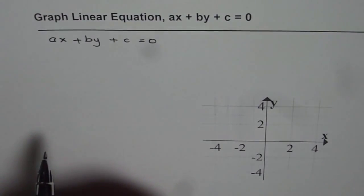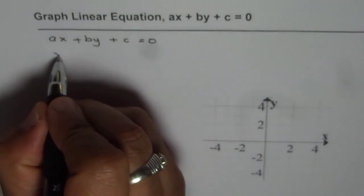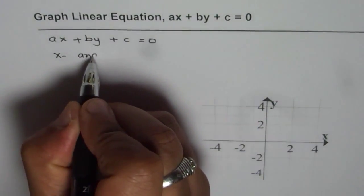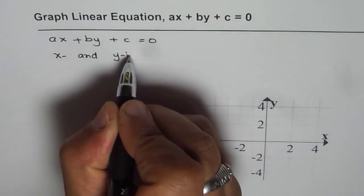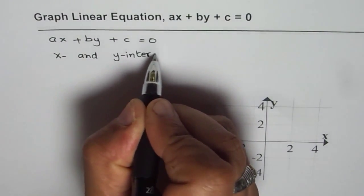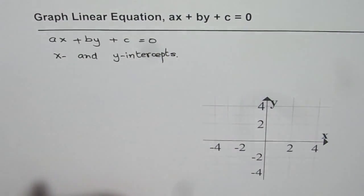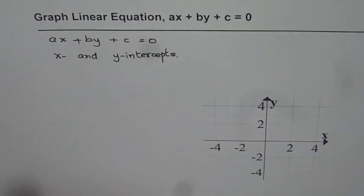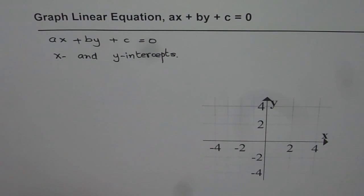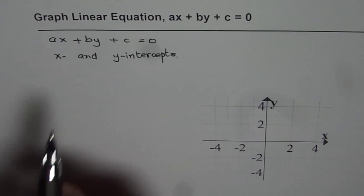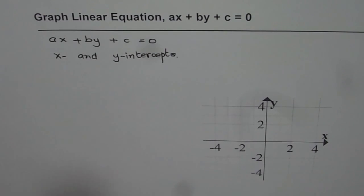The best way to graph this equation is to find X and Y intercepts. You can plot a line if you know two points on that line. Any two points when joined with a straight line will represent that equation. X intercept and Y intercept could be our critical points.